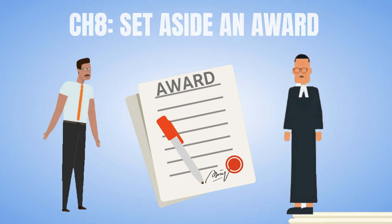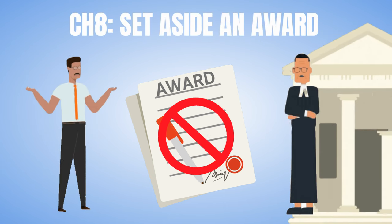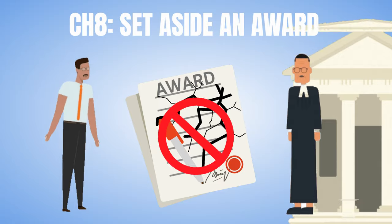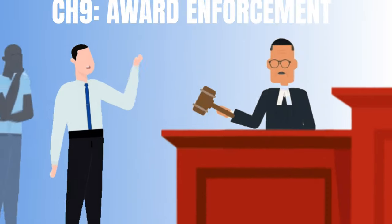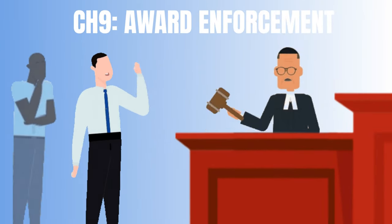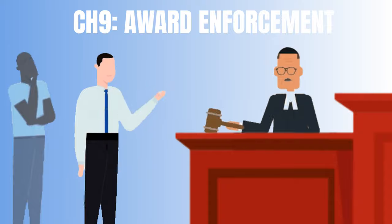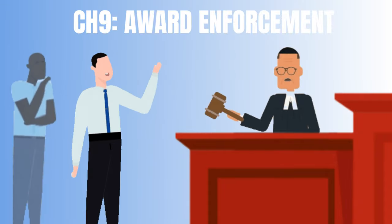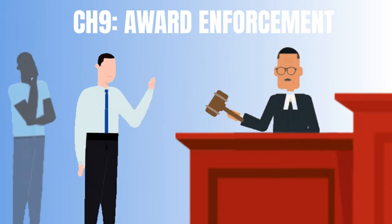Chapter 8 deals with when it is possible to ask the court to set aside an award, and the grounds for that challenge. And lastly, Chapter 9 deals with recognizing and enforcing an award and the available grounds to challenge that enforcement.